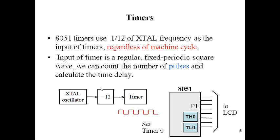For timers, the clock frequency is divided by 12, and that will be given to the timer without any missing cycles or pulses. We can calculate the pulses using timers and display the timer value by connecting to any ports.